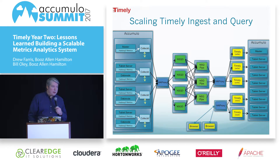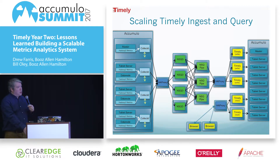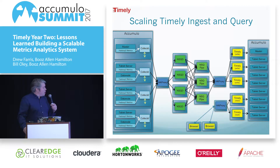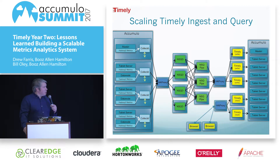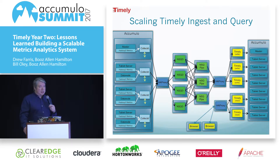Let's talk about how we scaled Timely out this year. What you see on this slide is a typical fan-in architecture. When you have a large number of data sources generating a fair amount of information, you can't have a connection per data source writing to your store. So we've employed NSQD and a couple of other components to fan-in data from a large number of machines to write to one Accumulo instance.